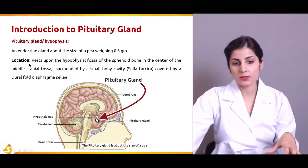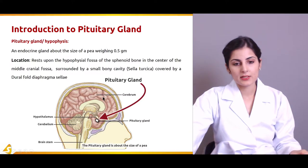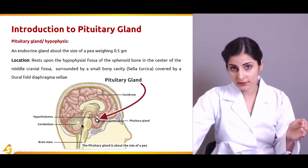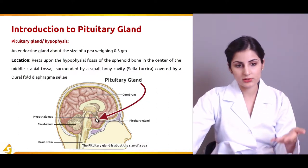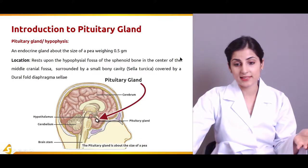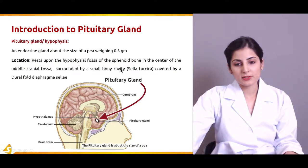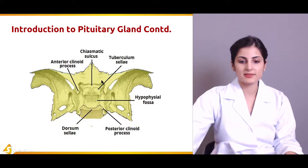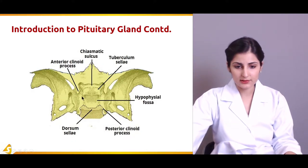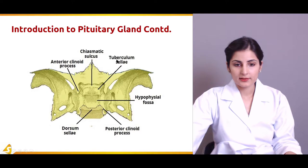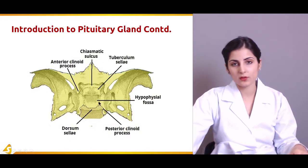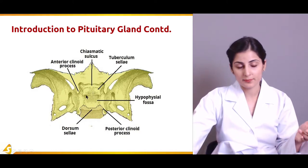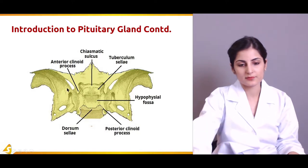This is the exact location of the pituitary gland in the brain. In the middle cranial fossa there is a bony depression known as the sella turcica. It is specially made for the pituitary gland, as you can see in this diagram. This is the hypophysial fossa, and the roof is formed by a flat layer of dura mater known as the diaphragma sellae.